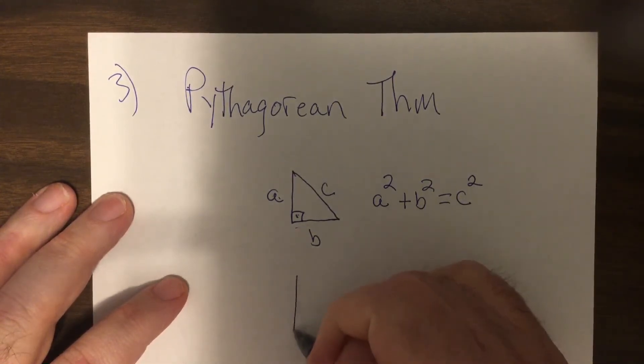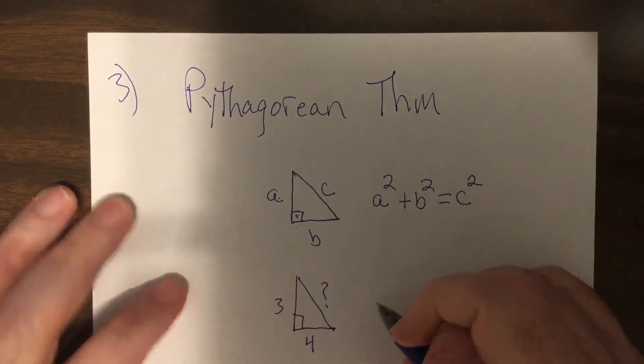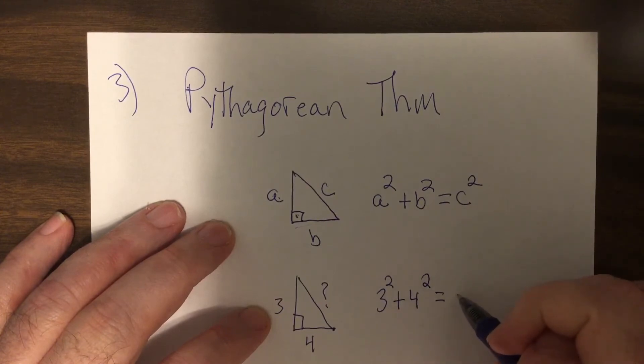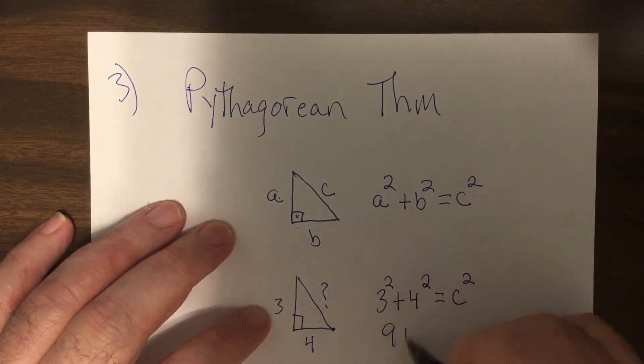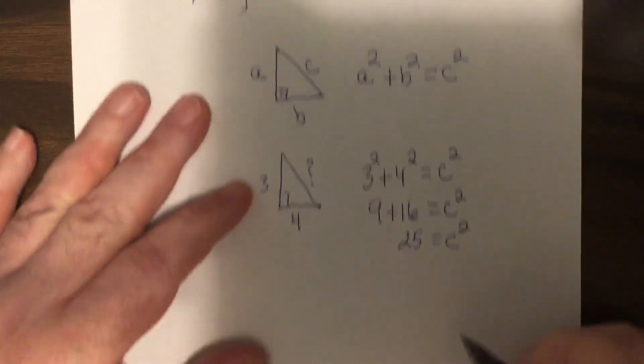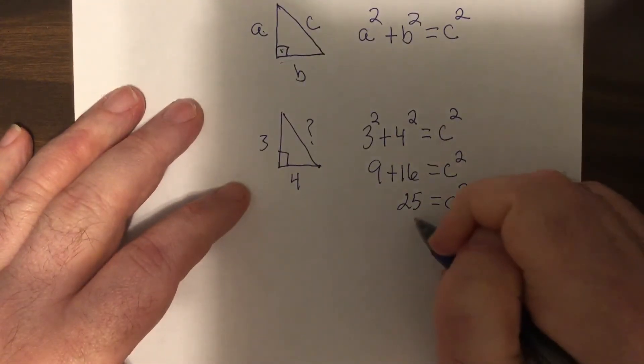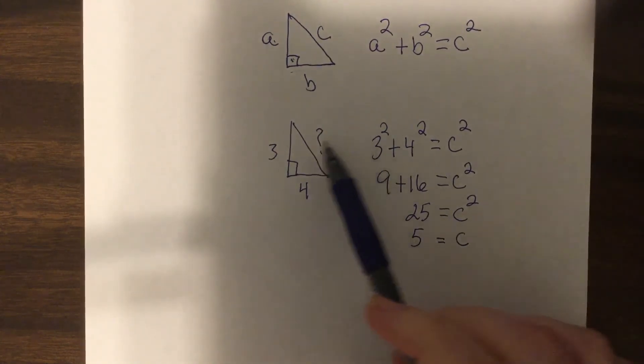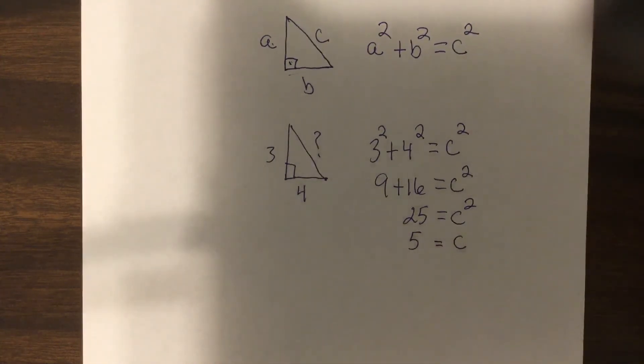If I give you this, and I say this is 3, this is 4, what's this? You would say, that's the hypotenuse, so it's 3 squared plus 4 squared equals c squared. So 9 plus 16 equals c squared. 25 equals c squared, so c equals 5. It's not plus or minus 5, because the side of an object can't be negative.